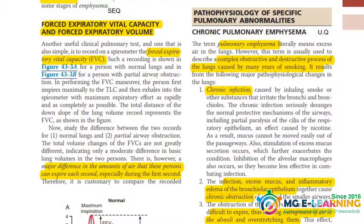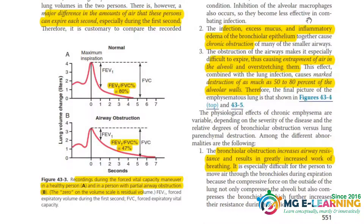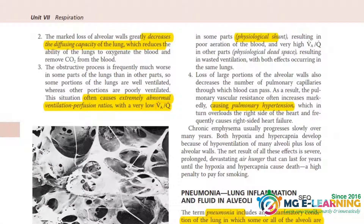The next very important topic of this chapter is emphysema. Emphysema is a past UQ, so you have to do it. The causes of obstruction in emphysema — all three points — and the following three points are about the effects of emphysema: it causes bronchial obstruction, it decreases the diffusion capacity of the lungs, and it also causes extreme abnormality in the ventilation-perfusion ratio. This is an important SQ and a past question.